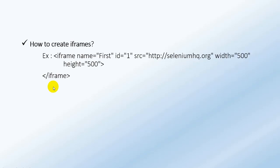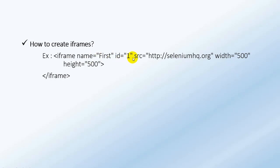We will discuss how we can create your own iframes. This is a very simple syntax. You have to use the iframe tag and define the source for that iframe. After that, you specify the width and height — these are the mandatory fields for the iframe. Optionally, you can define the name or id of the iframe, and after that you close the iframe tag.